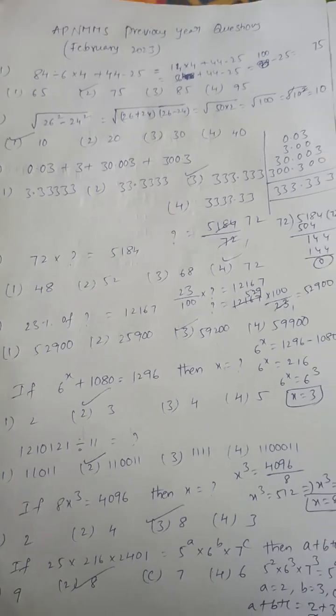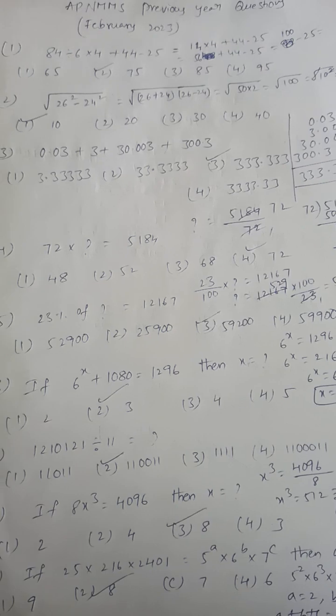Square root of 26 plus 24 into 26 minus 24. 26 plus 24 is 50, 26 minus 24 is 2, so 52 is 100.